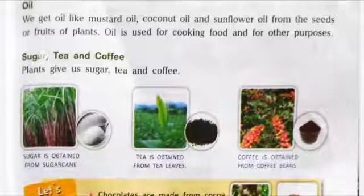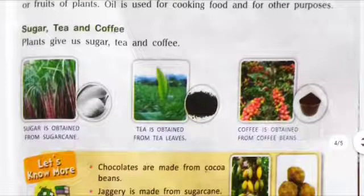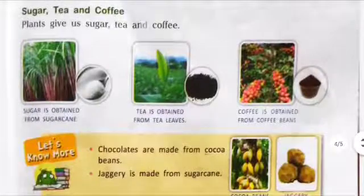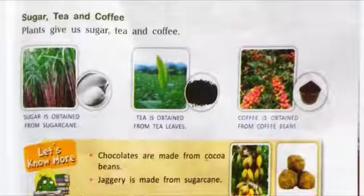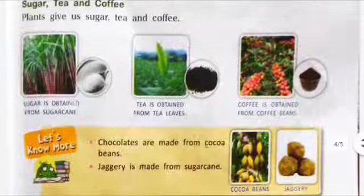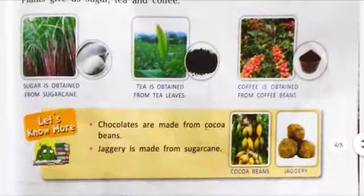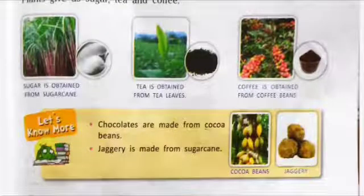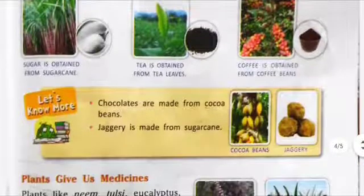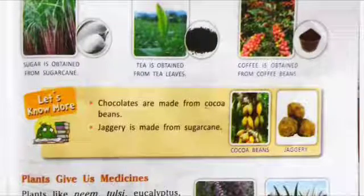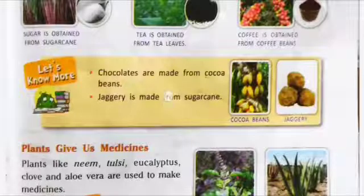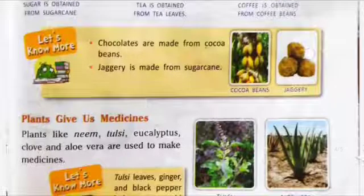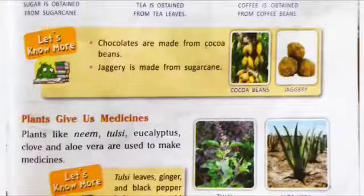Now coming to sugar, tea, and coffee. Plants give us sugar, tea, and coffee. Sugar is obtained from sugar cane, tea is obtained from tea leaves, and coffee is obtained from coffee beans. Chocolates are made from cocoa beans, and jaggery is made from sugar cane.